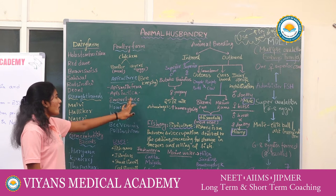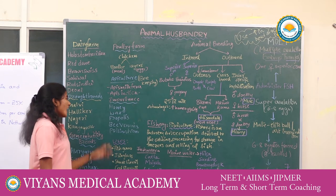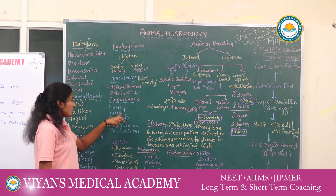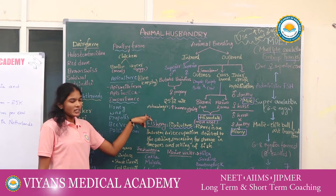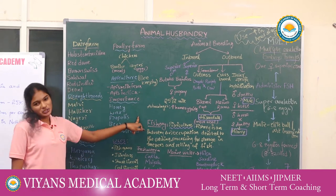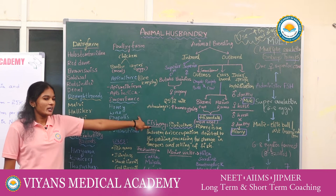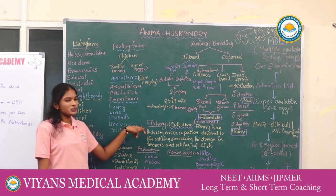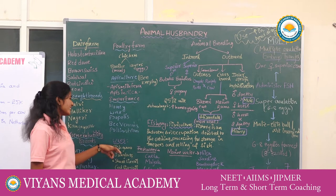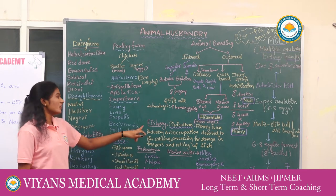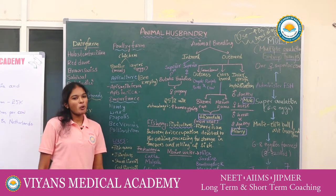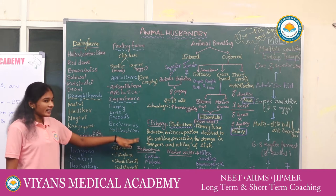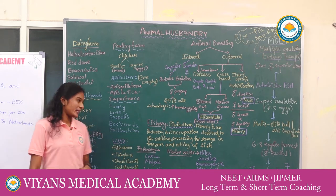Economic importance of honeybees: Honey — it is a rich source of sucrose. Wax — it is used to prepare cosmetics. Propolis — it is used for treatment of inflammation. Bee venom — it is used for treatment of arthritis. Pollination — do you know, bees are the best pollinators? They can pollinate Brassica, apple, and pear.